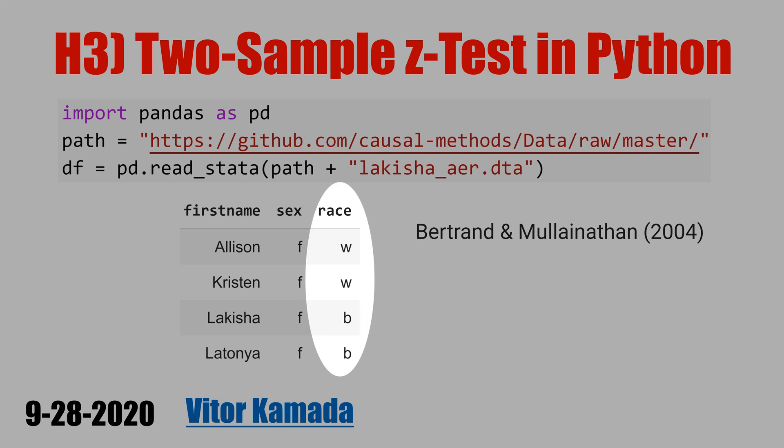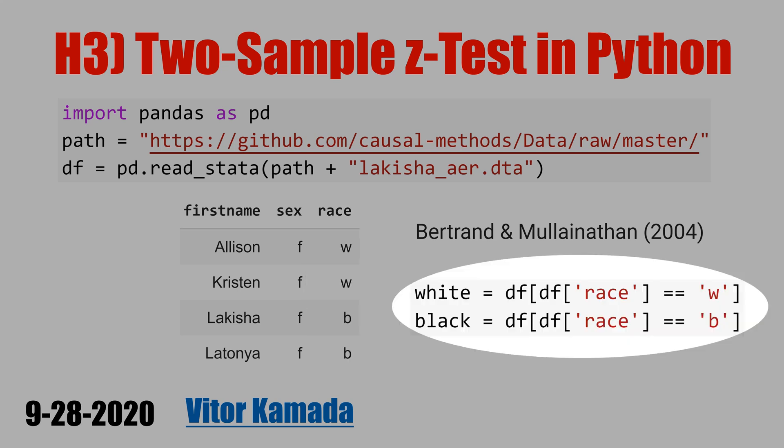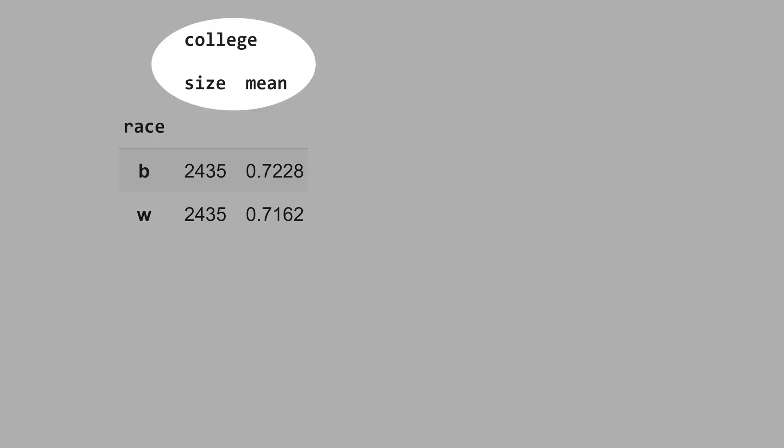Because all the observations are under one variable, race, we need to select a subgroup using this code. This code here selects the white people, and this code here selects the black people. Let's see the proportion of college degree broken by black and white.